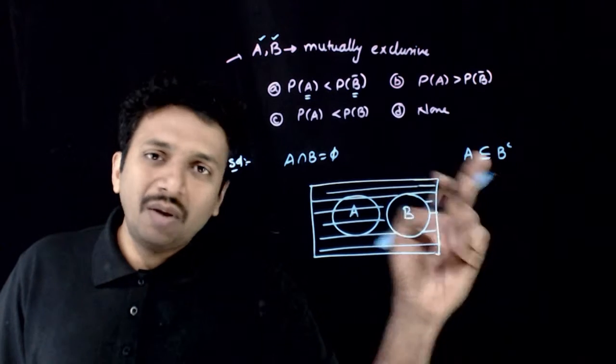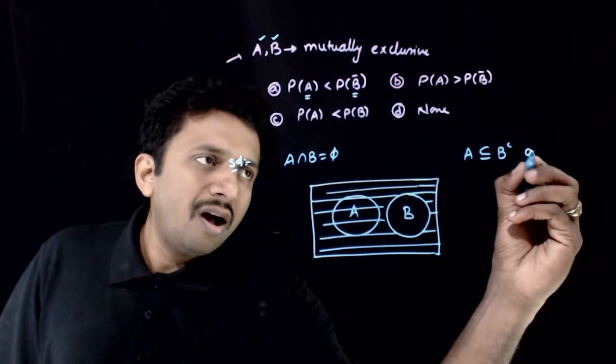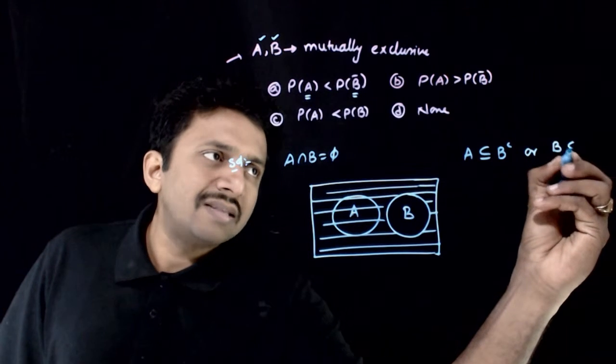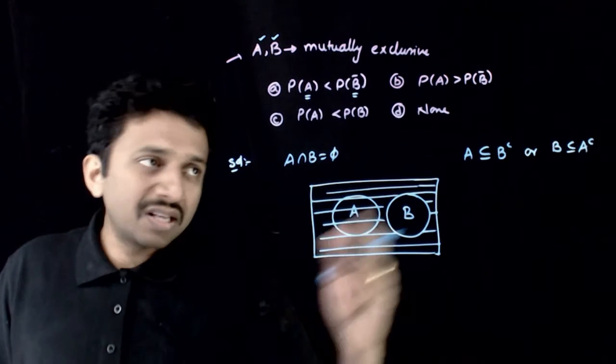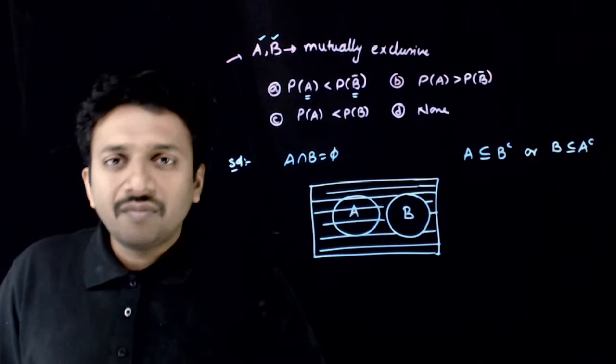A can be either a subset or equal to B complement. Or, I can also say B is a subset of A complement. Both of these will be valid.